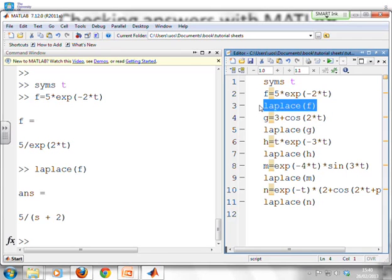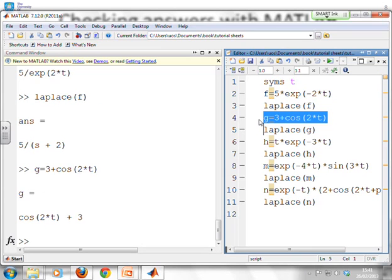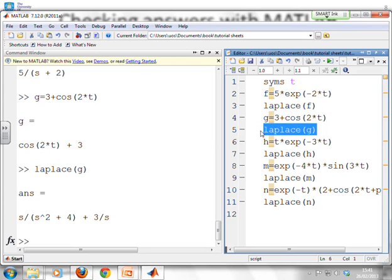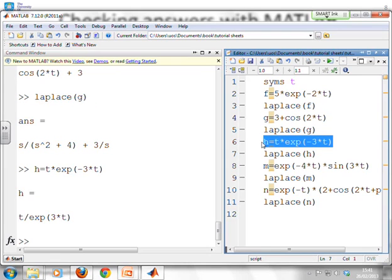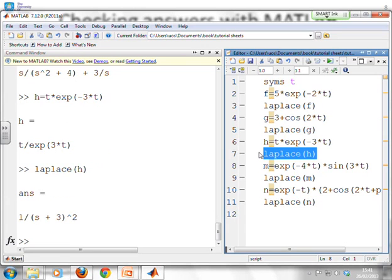The next one, g. G was 3 plus cos(2t). There it is. What's Laplace of g? And there you can see s over s squared plus 4 plus 3 over s. What about h? That was t e to the minus 3t. We can now do Laplace of h. There it is. And what do we get? 1 over (s plus 3) squared, as expected.